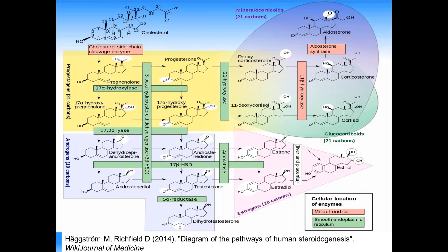The first thing you see is cholesterol undergoing cholesterol side chain cleavage to be metabolized to pregnenolone. Compartmentalization also refers to organelles — the cytochrome P450 side chain cleavage enzyme, aldosterone synthetase enzyme, and 11-beta-hydroxylase all occur within the mitochondria. The remainder of the steroidogenic enzymes occur within the smooth endoplasmic reticulum, with the conversion of estrone and estradiol to estriol specifically taking place in the liver and the placenta.